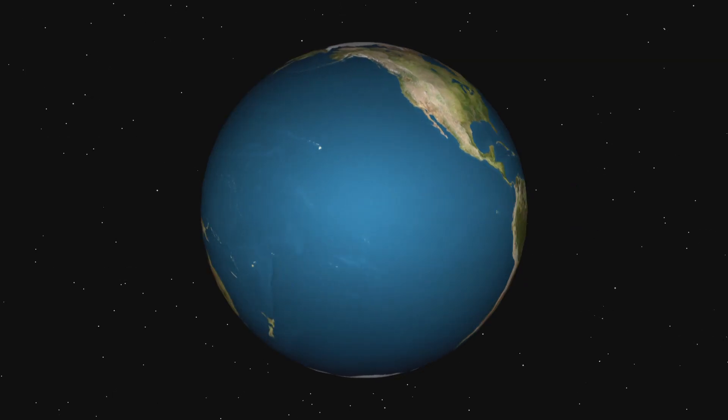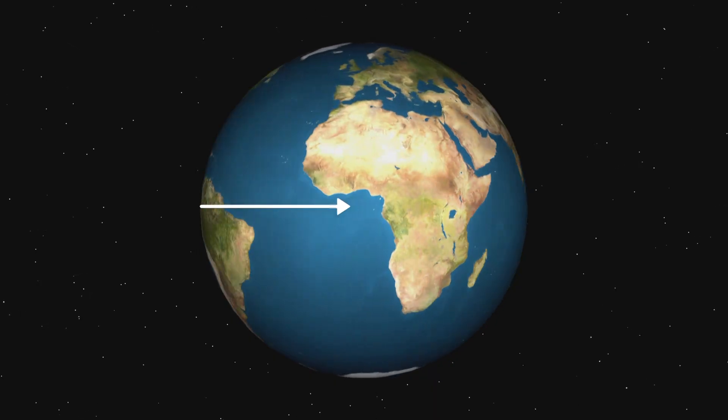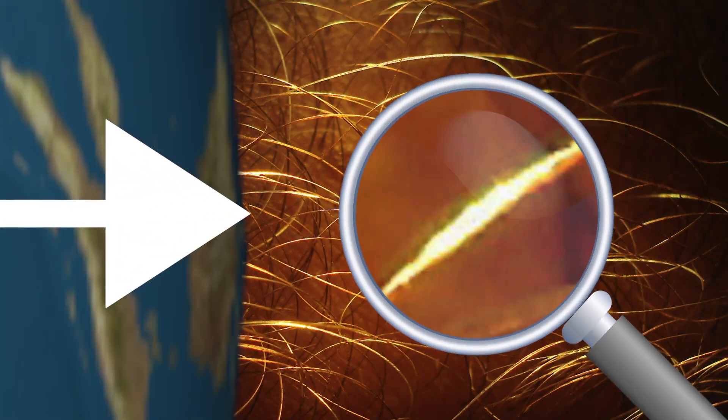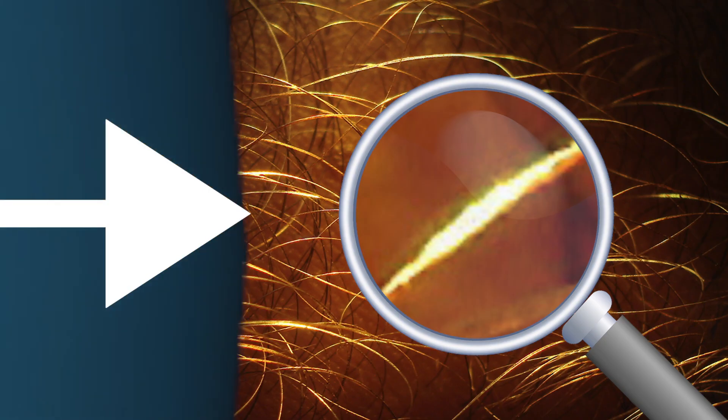To give you a sense of scale, that's like predicting and measuring the diameter of the earth with an accuracy of a fifth of the diameter of a human hair. This is crazy accurate.